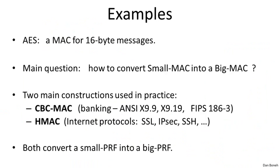Now that we know any secure PRF is also a secure MAC, we already have our first example MAC. In particular, we know — or at least believe — that AES is a secure PRF. Since AES takes 16-byte inputs, that is, the message space for AES is 128 bits or 16 bytes, the AES cipher essentially gives us a MAC that can MAC messages that are exactly 16 bytes. So that's our first example of a MAC.